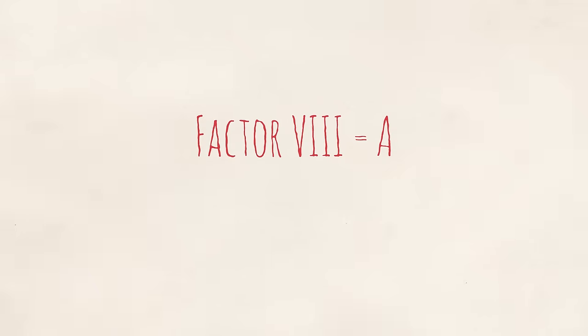Each person with hemophilia is missing one of two kinds of factors. If you're missing factor eight, you have hemophilia A. If you're missing factor nine, you have hemophilia B. Either one can be mild, moderate, or severe.